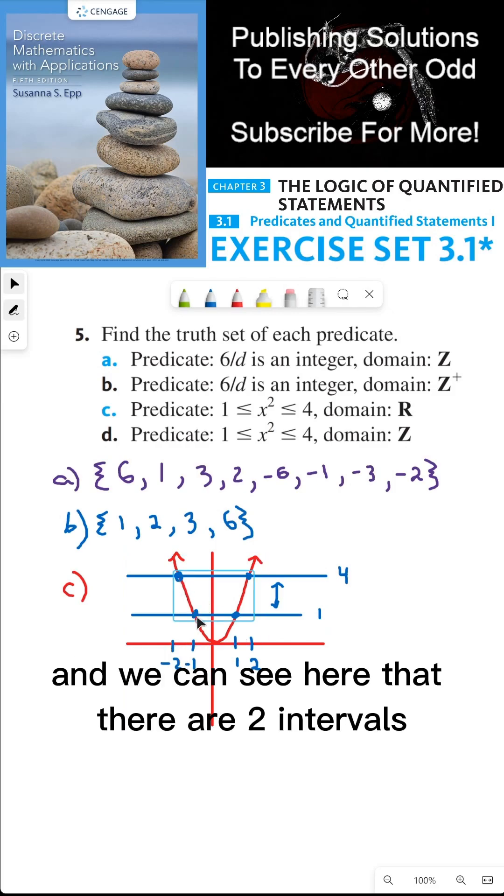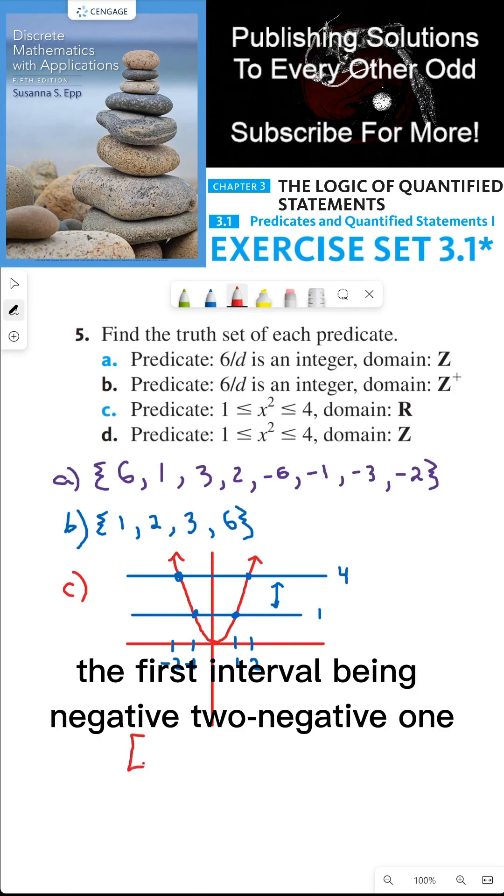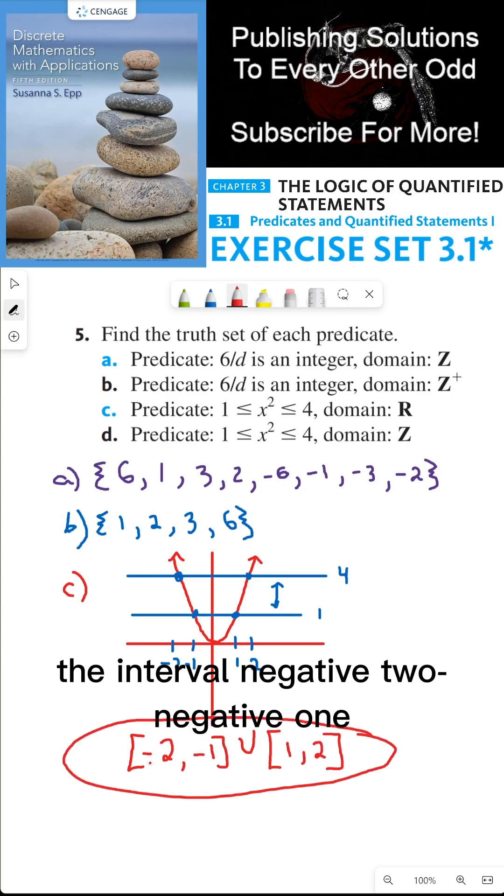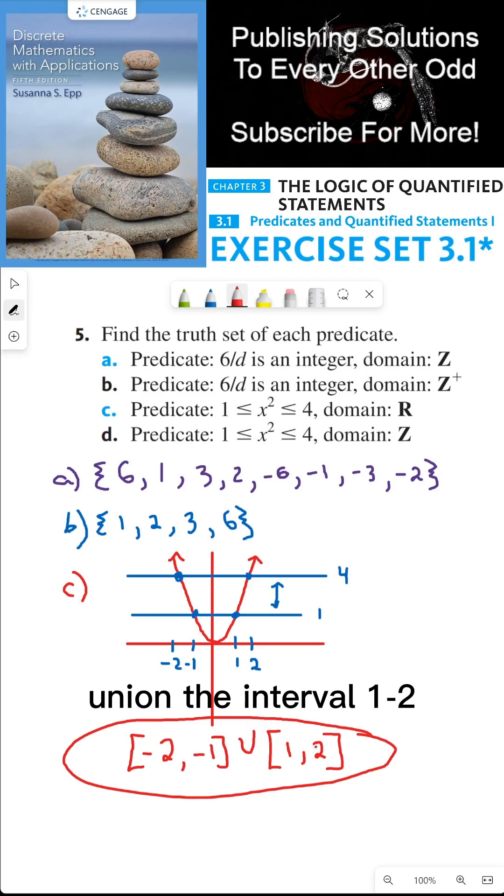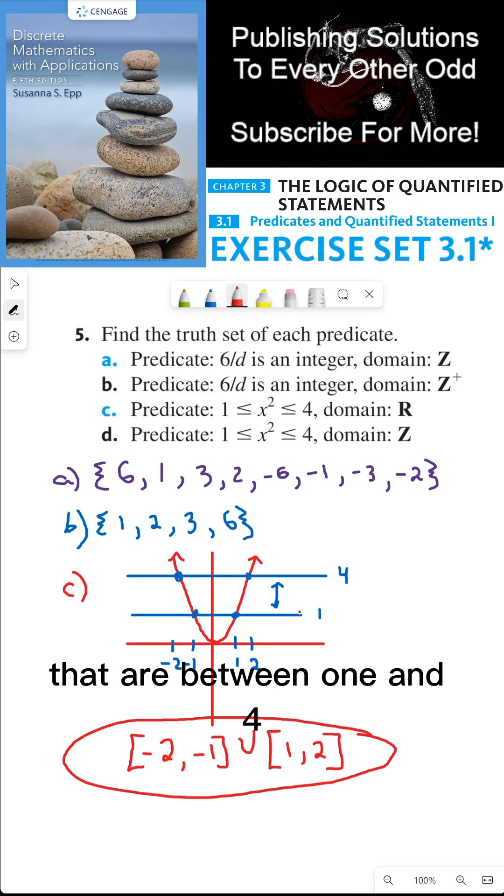And we can see here that there are two intervals from the graph, the first interval being from negative 2 to negative 1, and union with the set interval from 1 to 2. So we have two intervals, the interval from negative 2 to negative 1, union the interval from 1 to 2. So these inputs correspond to outputs of the function x squared that are between 1 and 4.